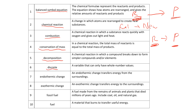An endothermic change transfers energy from the surroundings — that is an endothermic change. An exothermic change transfers energy to the surroundings. So exothermic goes to the surroundings, and endothermic is from the surroundings.